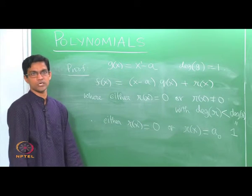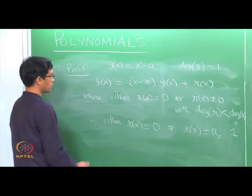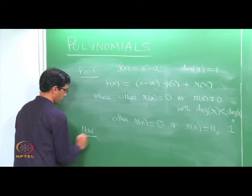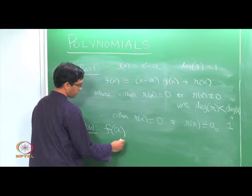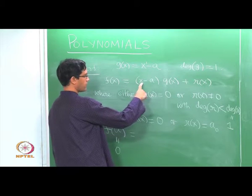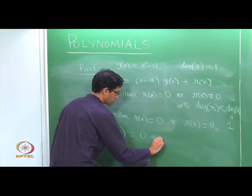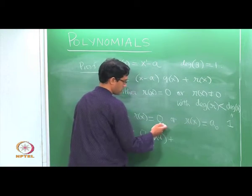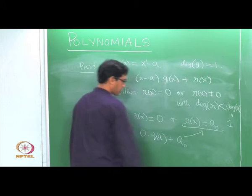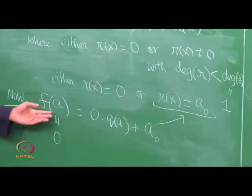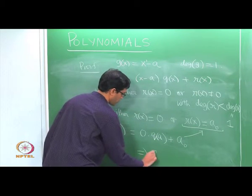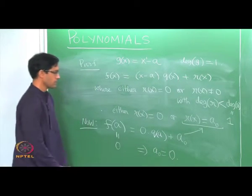The claim is that the remainder is in fact a zero constant. It cannot be a non-zero constant, because we know f(a) = 0. If I plug in x = a, the left-hand side is f(a) = 0. On the right-hand side, the term (x − a) becomes 0, giving 0 · q(a) + r(a) = 0 + A₀. So A₀ must be 0. We conclude from here that A₀ is actually 0.